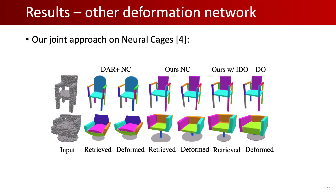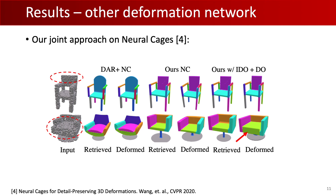We also show that the advantages of our joint training are not specific to our novel deformation function, but also improve other state-of-the-art deformation modules, such as neural cages. Observe that the retrieved models of our joint approaches better match the geometry of the input chair and sofa. Moreover, our structure-aware deformation function is able to match local part geometries, such as the thickness of the sofa.